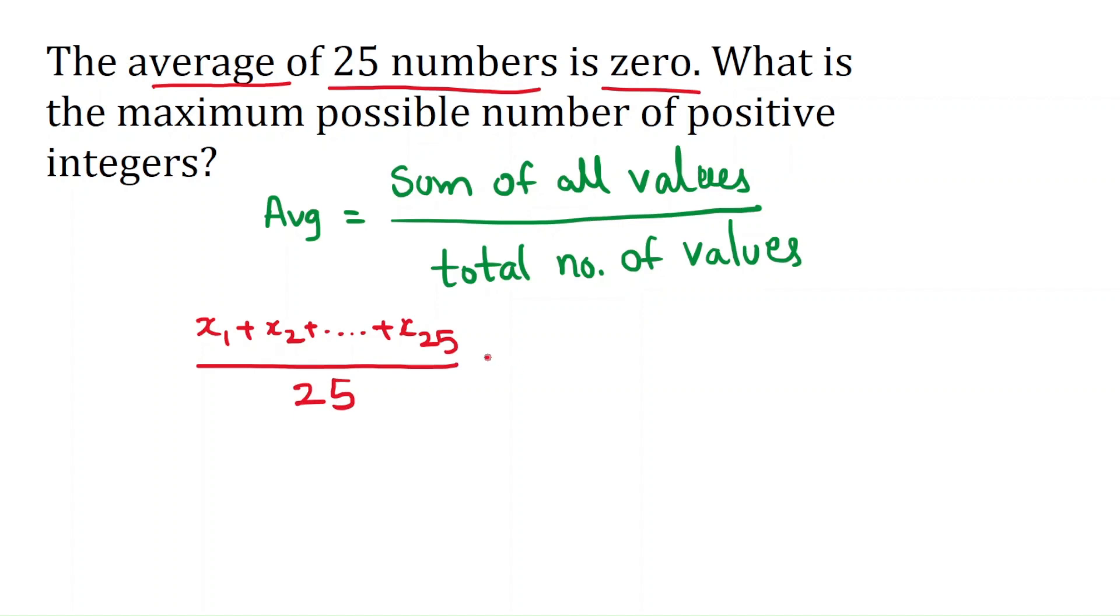is zero. The average is zero here. 25 goes to the other side, then it will be zero times 25 is zero. That means x1 plus x2 plus x3 plus and so on x25 equals zero.